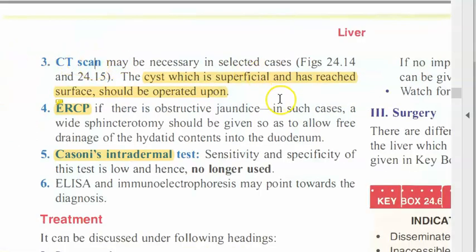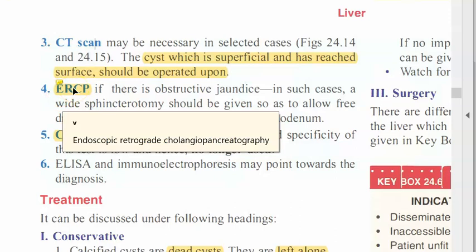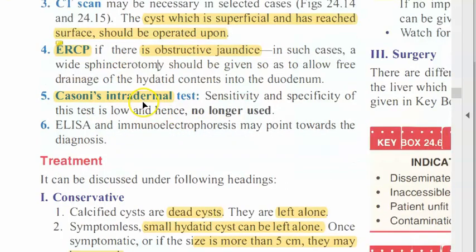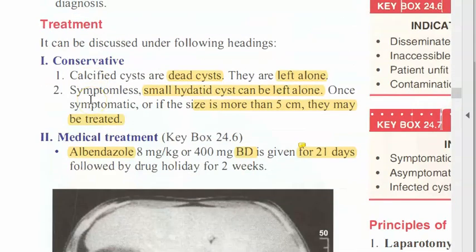If the cyst is superficial you will have to operate because it can rupture and cause anaphylaxis. ERCP — endoscopic retrograde cholangiopancreatography — can be done to check for obstructive jaundice. Casoni's intradermal test is similar to the Mantoux test: intradermal injection of hydatid fluid to check hypersensitivity, though this is no longer used. ELISA and other tests can check for antibody and antigen against the worm.